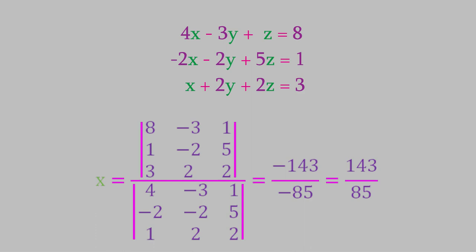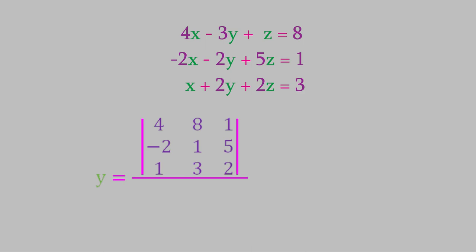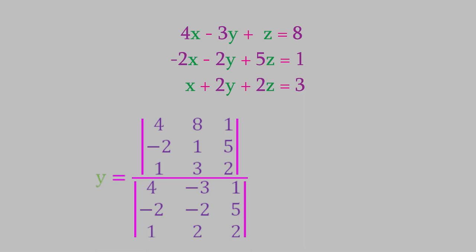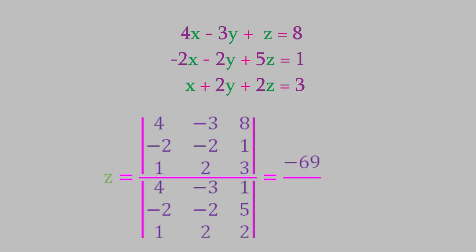We do the same thing to find the value of y. We have a fraction whose numerator is a determinant with the coefficients on y replaced by the answers to the equations, and whose denominator is the determinant of all coefficients. That fraction is 13 over negative 85, so the value of y is negative 13 over 85. Finally, we can find the value of z. The numerator determinant has a value of negative 69, and the denominator is the same negative 85, so z equals 69 over 85.